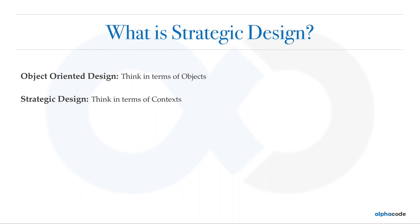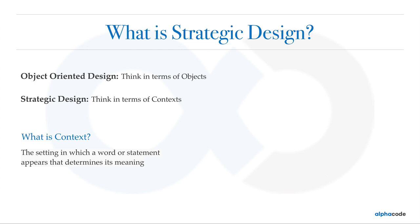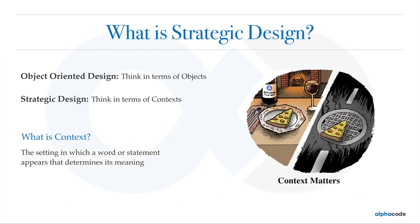When you are thinking in terms of strategic design, you need to think in terms of contexts. A context is the setting in which a word or statement appears and that determines its meaning. If you've done machine learning work, you know how important context is in CNNs or word embeddings. For example, you have a pizza slice in two different contexts — you might pay for one but not take the other for free, because they are used in different contexts.